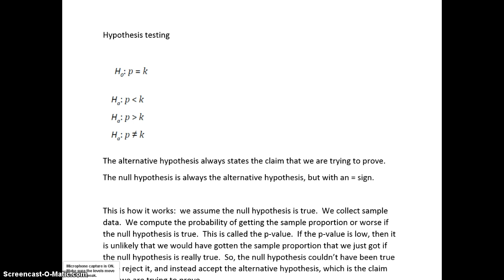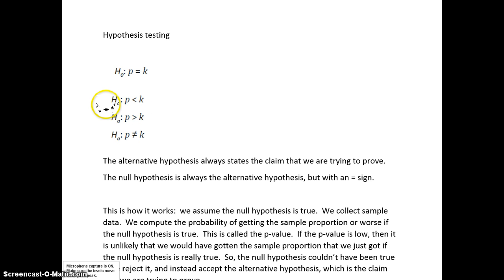Hypothesis testing is a little bit different. We're not really trying to get an estimate of the population proportion. We're trying to make a claim about the population proportion. In a hypothesis test, you have two sets of hypotheses: the null hypothesis and the alternative. The alternative hypothesis is always the claim we're making about the population proportion — it's the claim we're trying to prove.